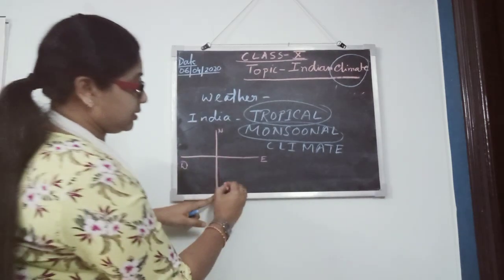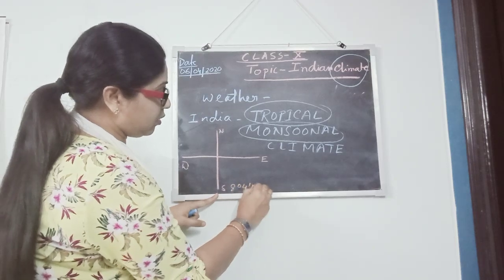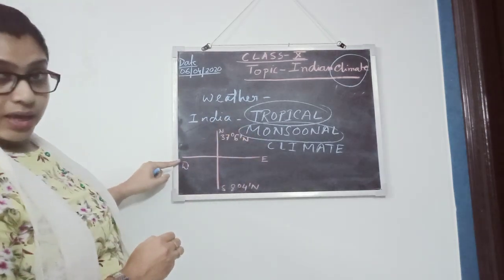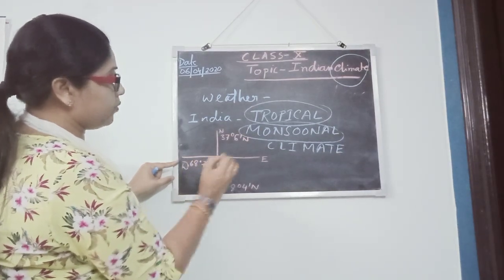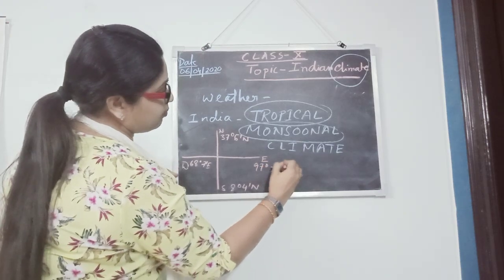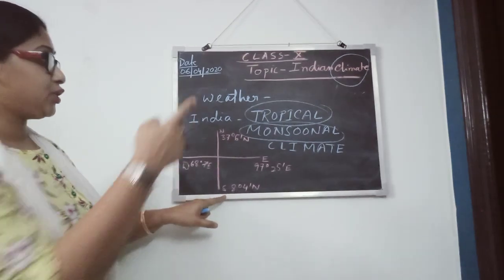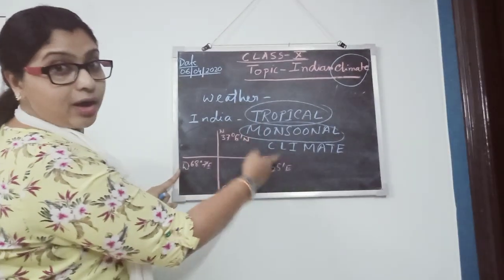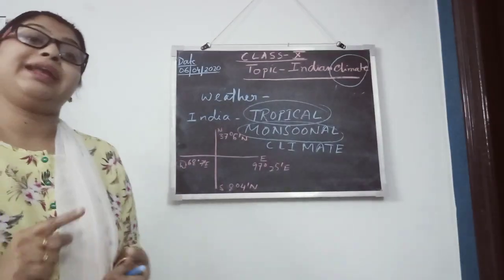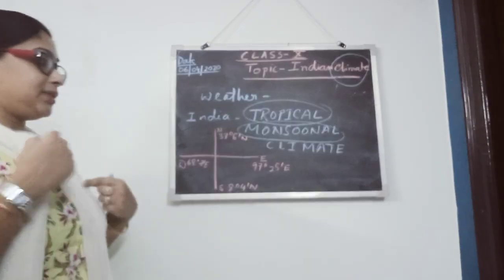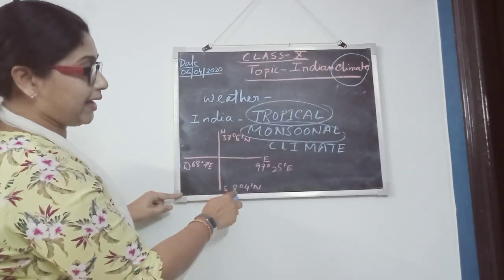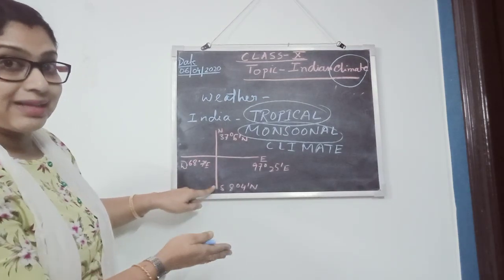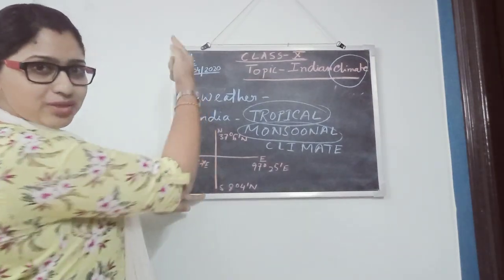At the southern side, the latitudinal extension is 8°4' North, and at the northern side it is 37°6' North. At the western side it is 68°7' East, and at the eastern side it is 97°25' East. From Kanyakumari to Srinagar in Jammu and Kashmir, and from Porbandar on the Kathiawar peninsula to Arunachal Pradesh on the eastern side — this is the longitudinal and latitudinal extension of India.